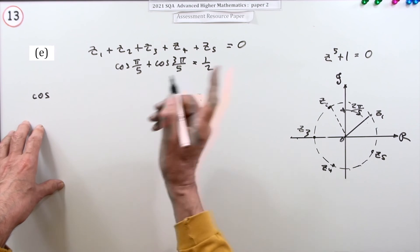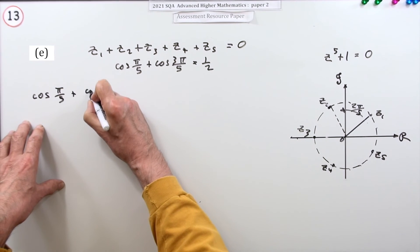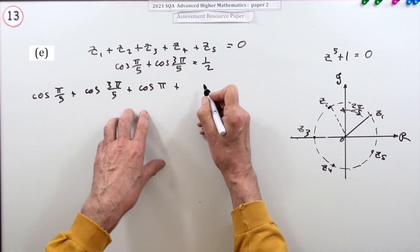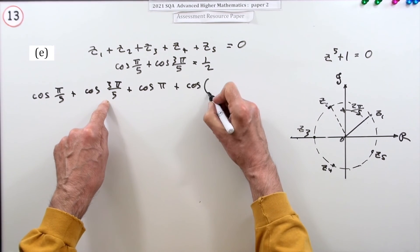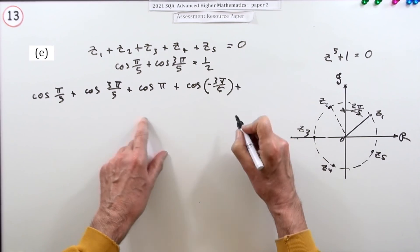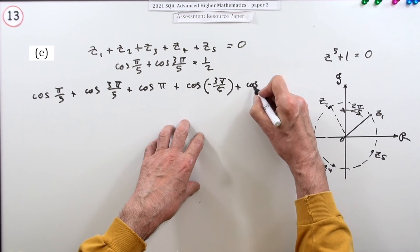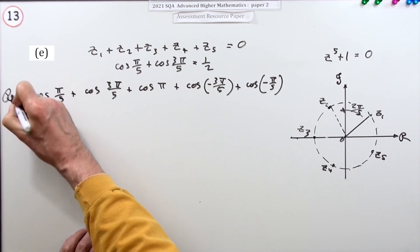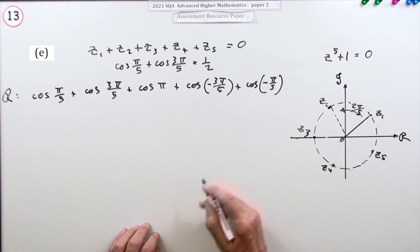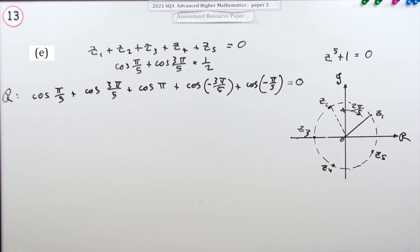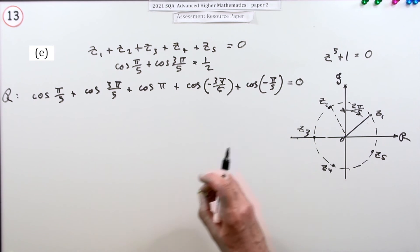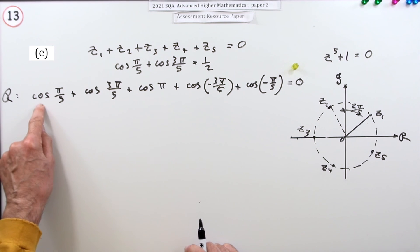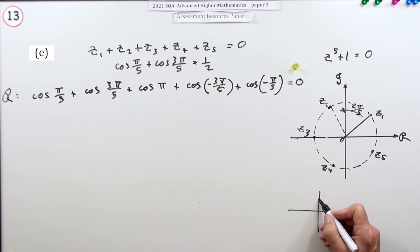Writing the real parts in order: cos(π/5) + cos(3π/5) + cos(π) + cos(−3π/5) + cos(−π/5) = 0. Equating the real parts to zero is worth one mark. We know cos(π) = −1, so those terms give −1. Now we can start tidying up using properties of cosine.